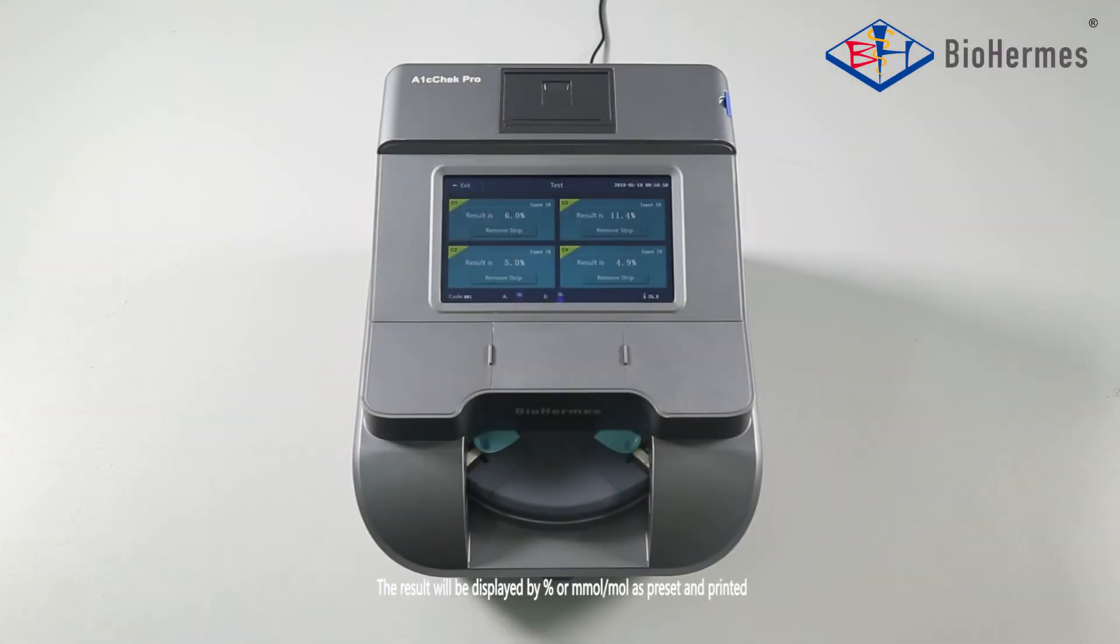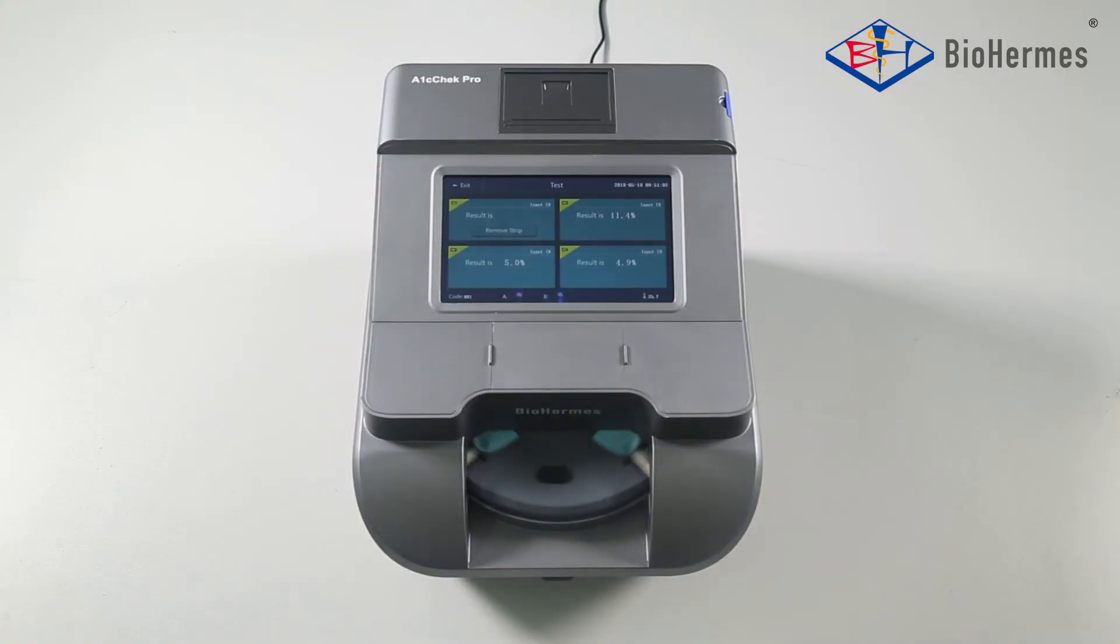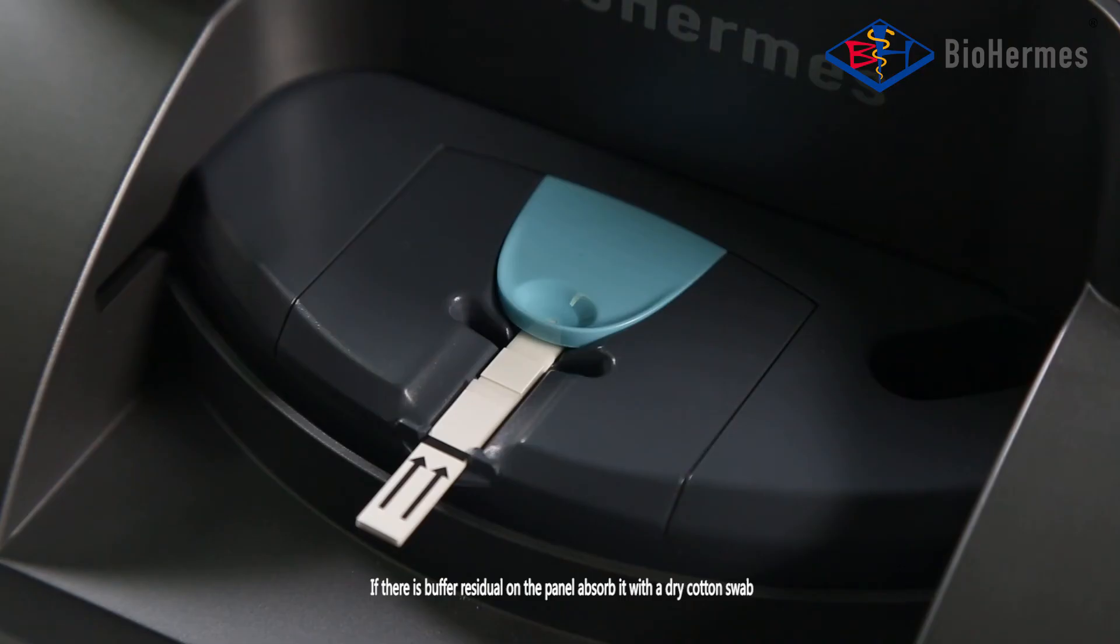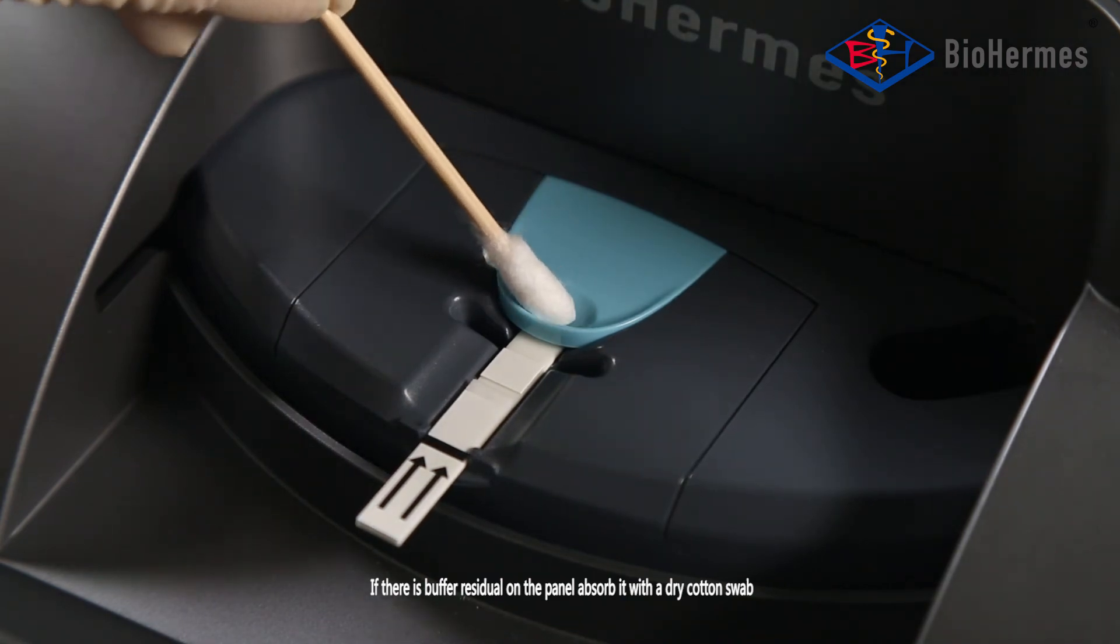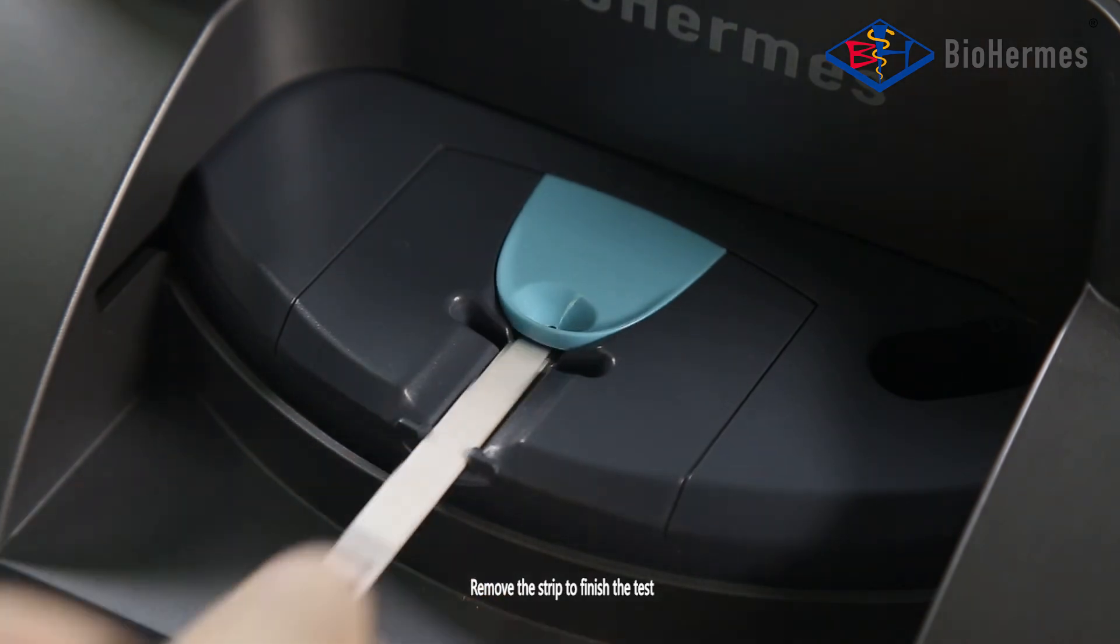Result reading. The result will be displayed by percent or millimole per mole as per set and printed. If there is buffer residual on the panel, absorb it with a dry cotton swab. Remove the strip to finish the test.